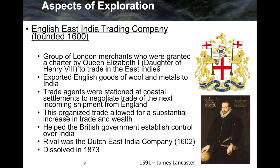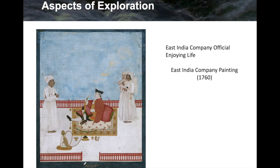This organized trade allowed for a substantial increase in trade and wealth and helped the British government establish control over India. There was a rival — the Dutch East India Company of 1602 — but it would not last. The English East India Company remained until 1873 when it was dissolved. Queen Victoria was known as the Empress of India, and the British government took over all of that in 1873.